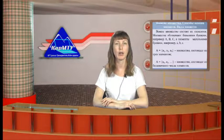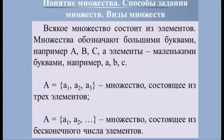Всякое множество состоит из элементов. Множество обозначают большими латинскими буквами, например A, B, C, а элементы — маленькими буквами. Множество и его элементы обозначаются следующим образом: A = {a1, a2, a3} — множество из трёх элементов; A = {a1, a2, ...} — множество из бесконечного числа элементов. Запись «A, B, C принадлежит П» говорит о том, что элементы A, B и C принадлежат множеству П. Если элемент A не принадлежит множеству, то пишут A ∉ П.